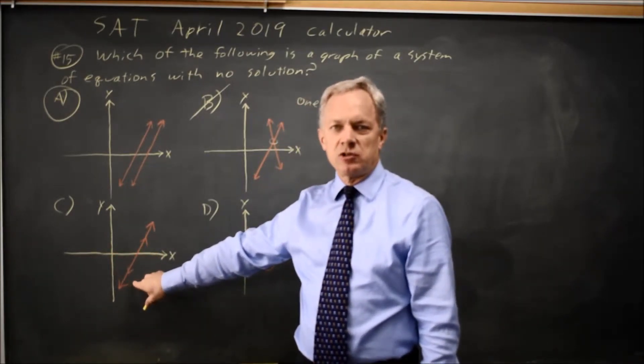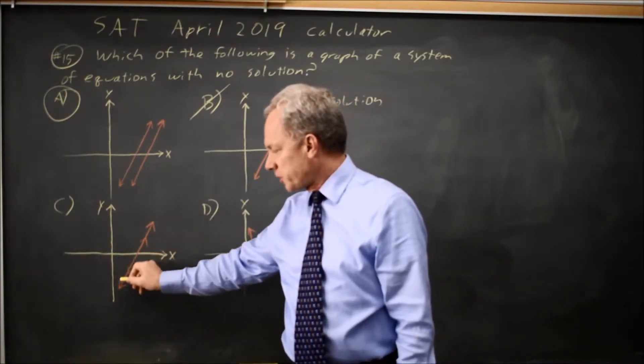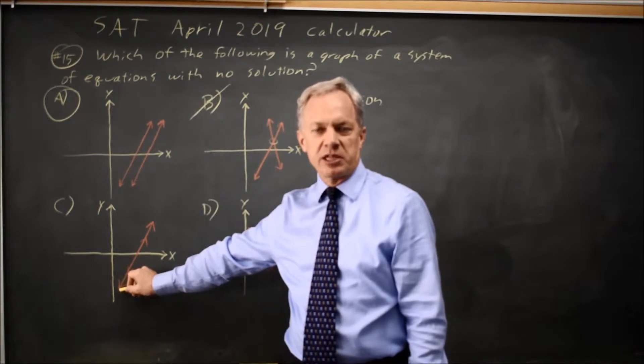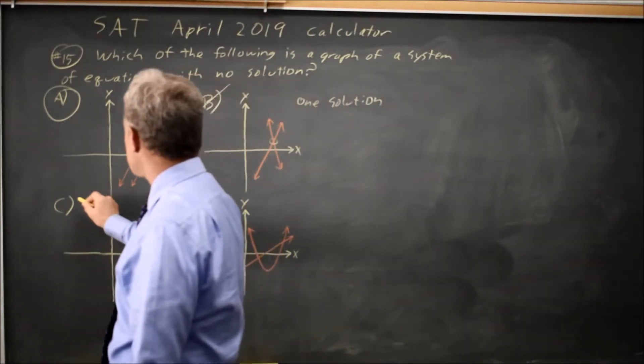In choice C, this looks to me like the two lines are the same line. I think that's what the double arrow pointing up-right and the double arrow pointing down-left means—there are two of the same line. So that's infinitely many solutions.